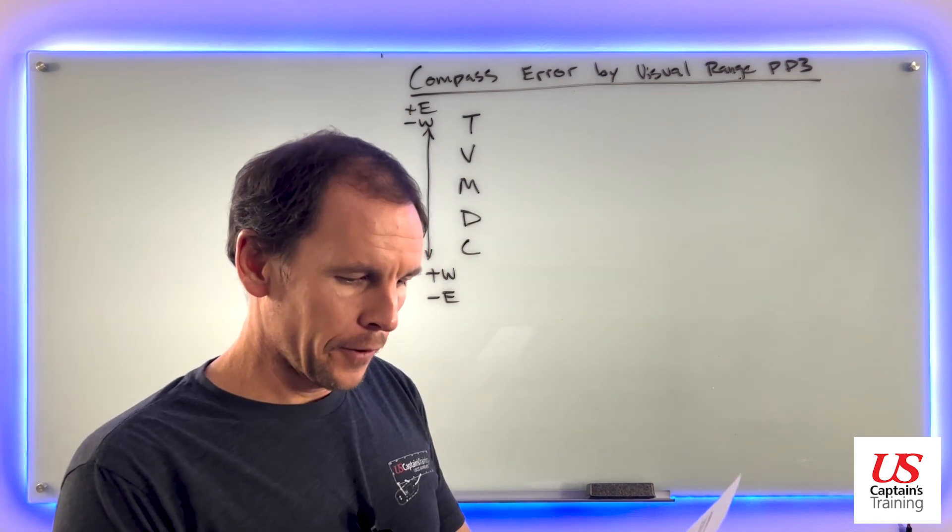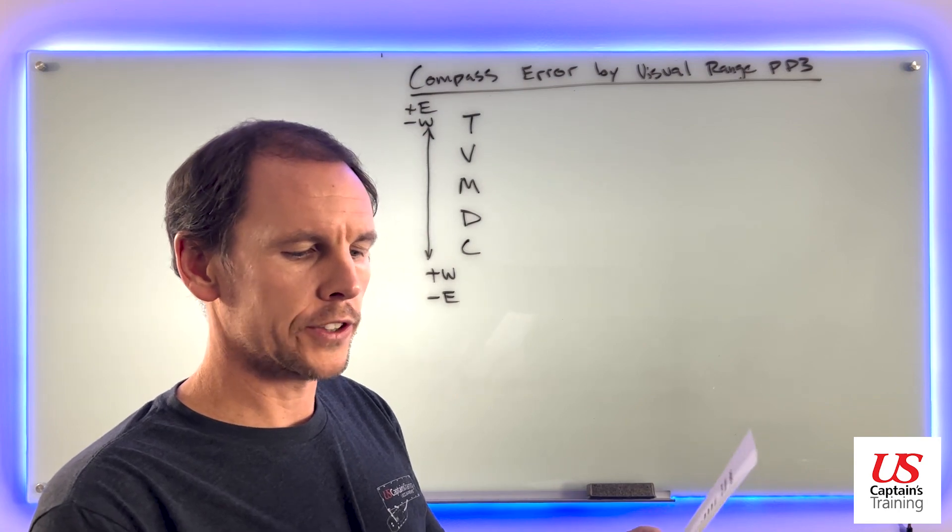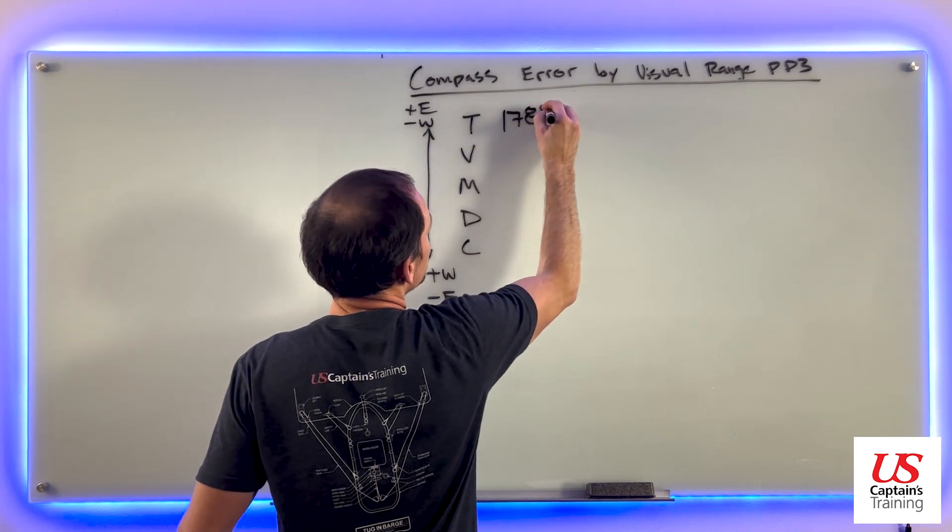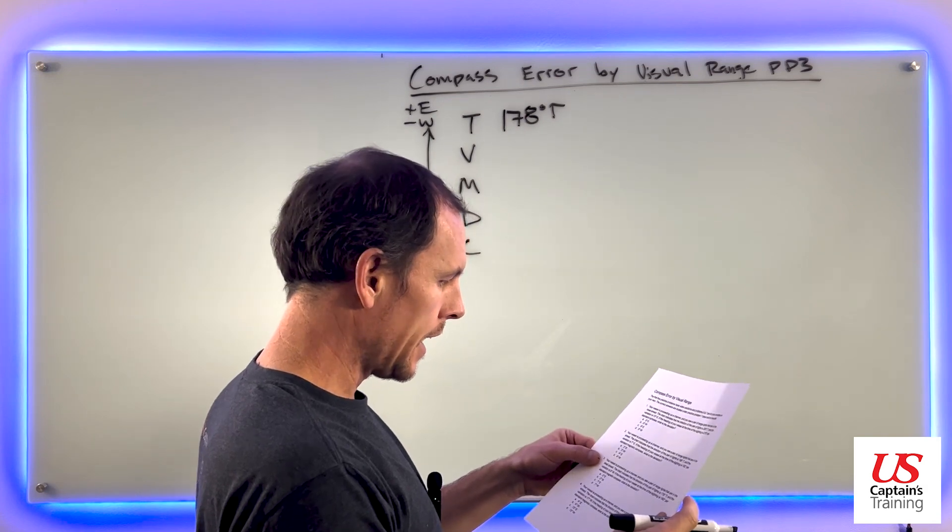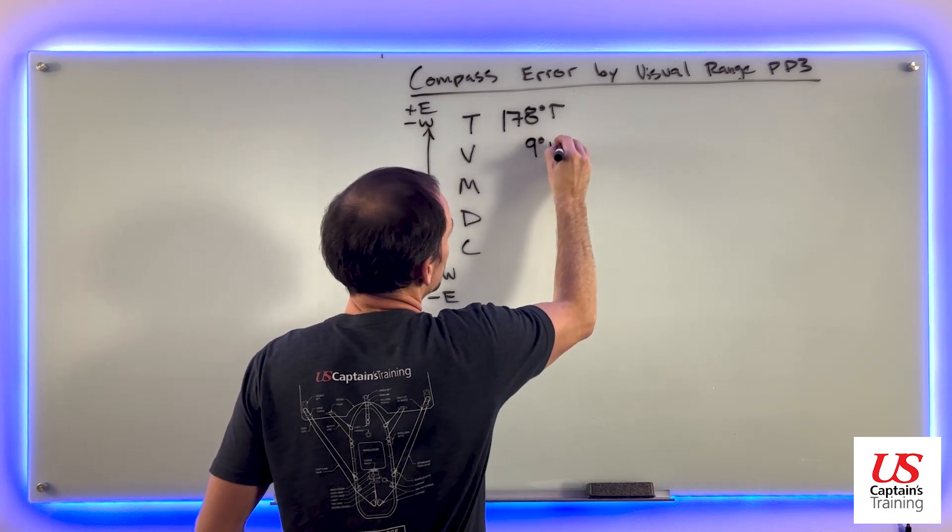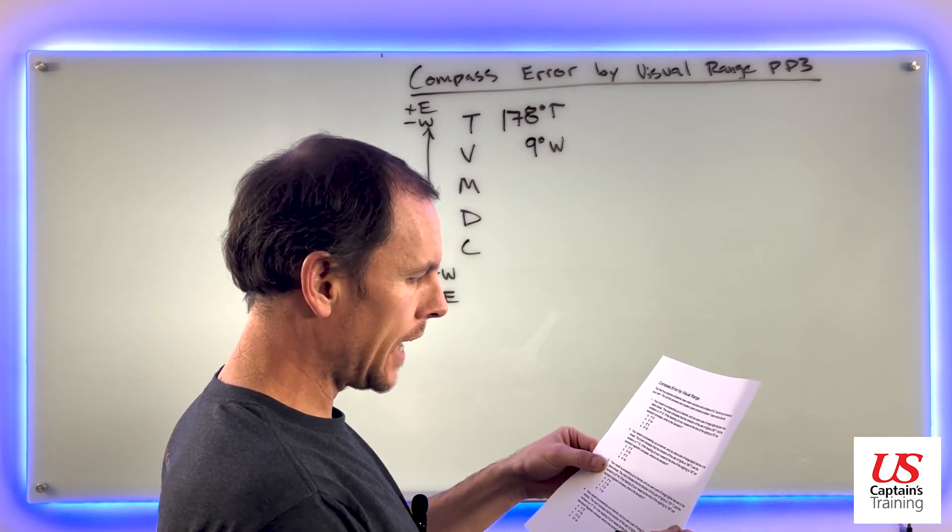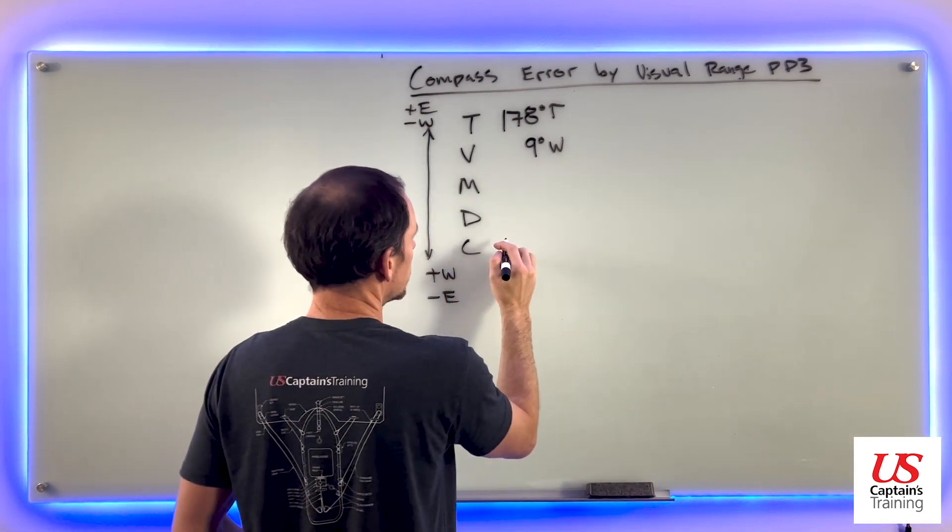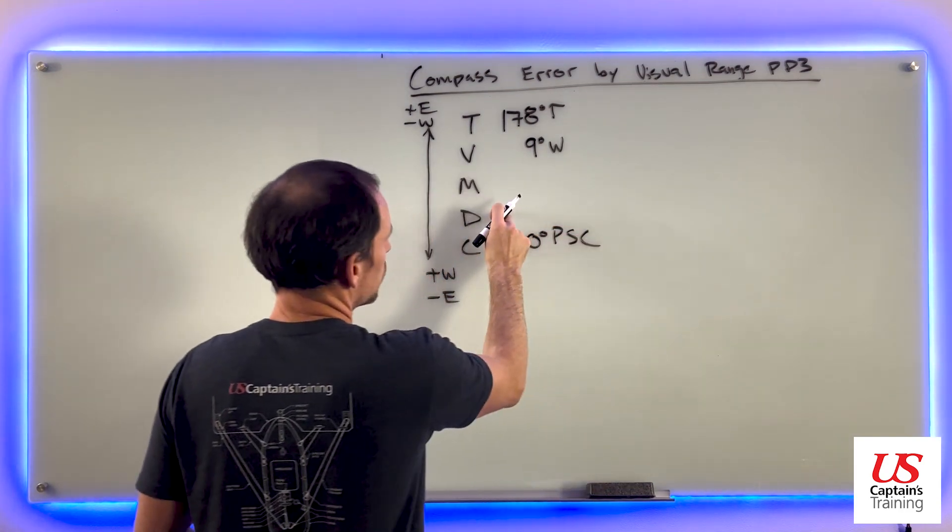So problem three, let's get our information down. It says, the chart indicates that the direction of this pair of lights is 178 degrees true. So that goes up here, 178 degrees true. And the variation is 9 west. So variation is 9 degrees west. If the heading of your vessel at the time of the sighting is 180 degrees per standard magnetic compass, what's the deviation? So PSC is 180. What's the deviation? Let's crunch these numbers.